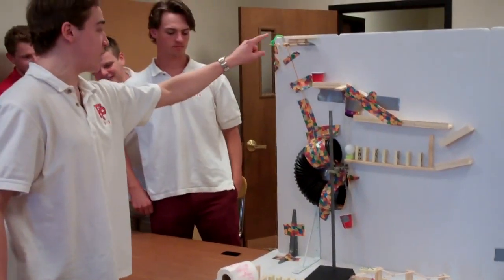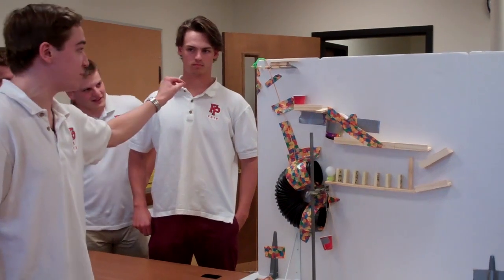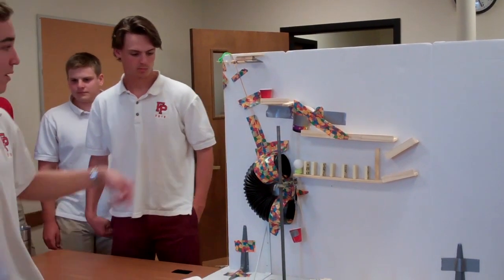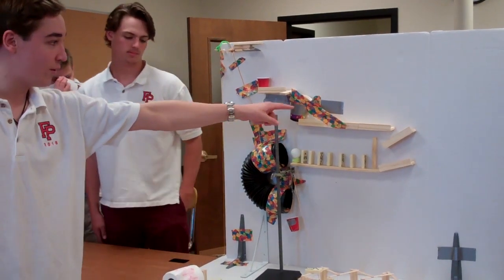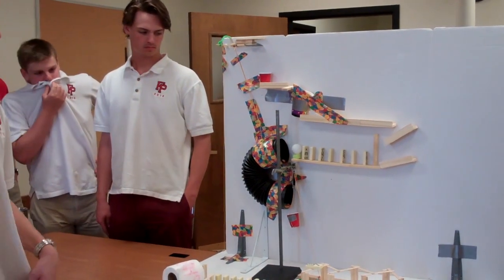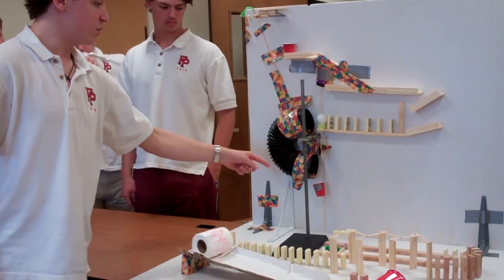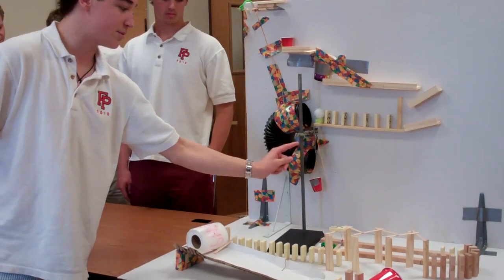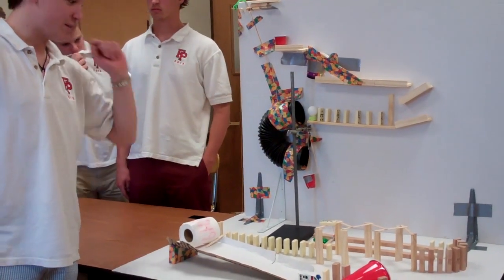So we have our lever arm here attached to the clothespin. So we pull the clothespin, lever arm falls, hits the cup with three marbles that come out. It goes through this cup with a little hole, hits that thing right there, knocks the dominoes over, knocking the ball through the tube. The tube goes into the cup which activates the pulley lifting up this popsicle stick.